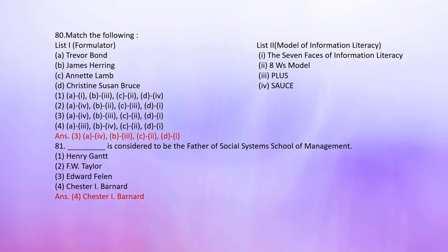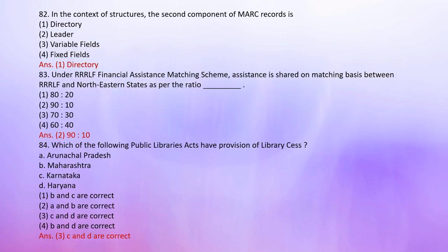Number 81: Who is considered the father of the Social Systems School of Management? 1. Henry Gantt, 2. F.W. Taylor, 3. Edward Phelan, 4. Chester I. Barnard. Number 82: In the context of MARC record structure, the second component of a marked record is — 1. Directory, 2. Leader, 3. Variable fields, 4. Fixed fields. The correct answer is 1: Directory.